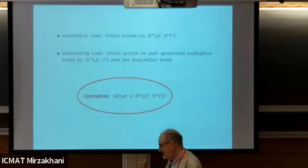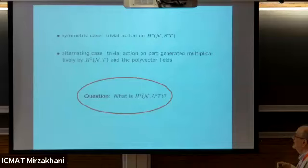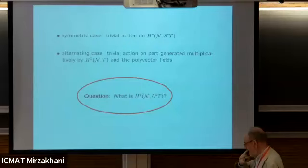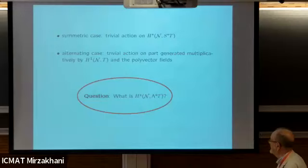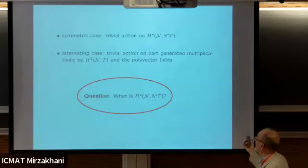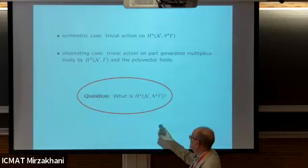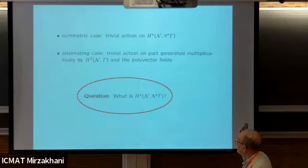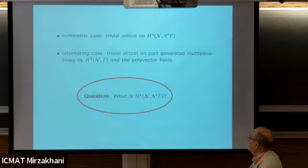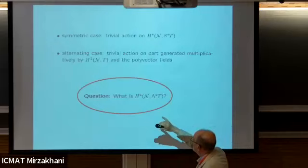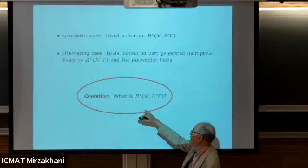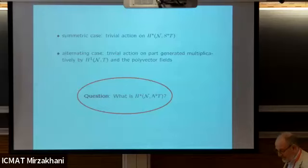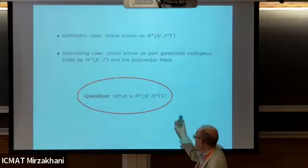We come up against the problem: what is this cohomology? All we've proved so far is that there is a trivial action on part of it - the H^0 coming from these polyvector fields from the invariant forms, and H^1. We can take exterior products and products in this cohomology, so we have a trivial action on some of that. But the underlying question - for me at least - is what is this? It seems like we knew everything about the moduli space of stable bundles, but this is one invariant that, as far as I know, we know very little about.